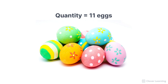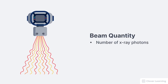This is true of eggs and it's also true of the x-ray beam. Concerning the x-ray beam, quantity refers to the number of x-ray photons. In this illustration of the x-ray beam, different energies are represented by different colors, but the quantity refers only to the total number, not the energy. When referring to the x-ray beam, a synonym for quantity is the word intensity. Quantity and intensity refer strictly to the total amount of x-ray photons in the beam, not the energy. It's just the number.